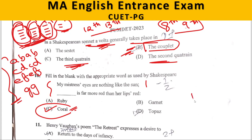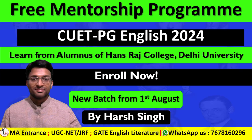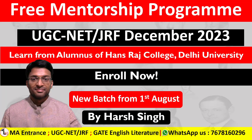In this video, we have done the first 10 questions. For the remaining questions, we will finish that in the next video — next part. If you require any assistance for CUET PG English, MA English Entrance, or UGC Net English, you can join our free mentorship program. To join, just call or WhatsApp us on 7678160296.